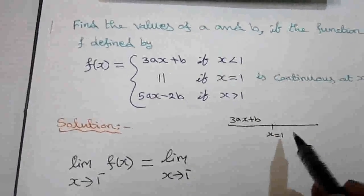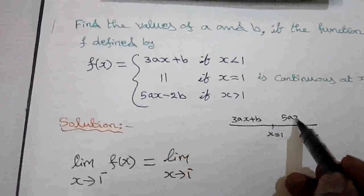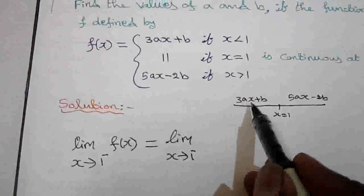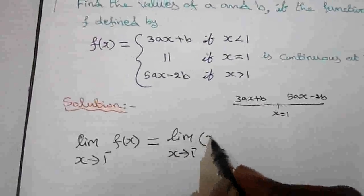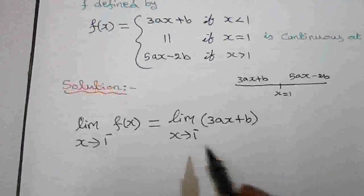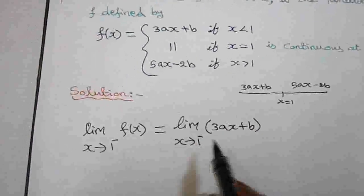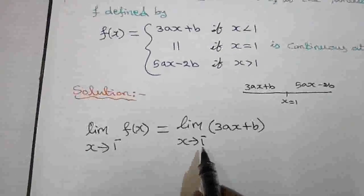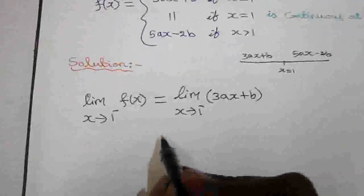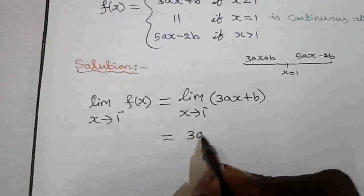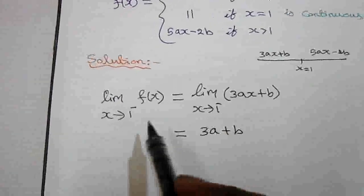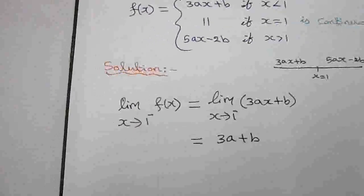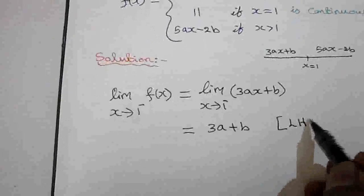For the right-hand side where x is greater than 1, the function value is 5ax minus 2b. So for the left-hand limit, we take the function value 3ax plus b. The minus in x tends to 1 minus indicates only the left limit — do not take minus 1, just substitute x equal to 1. So the left-hand limit value is 3a plus b.